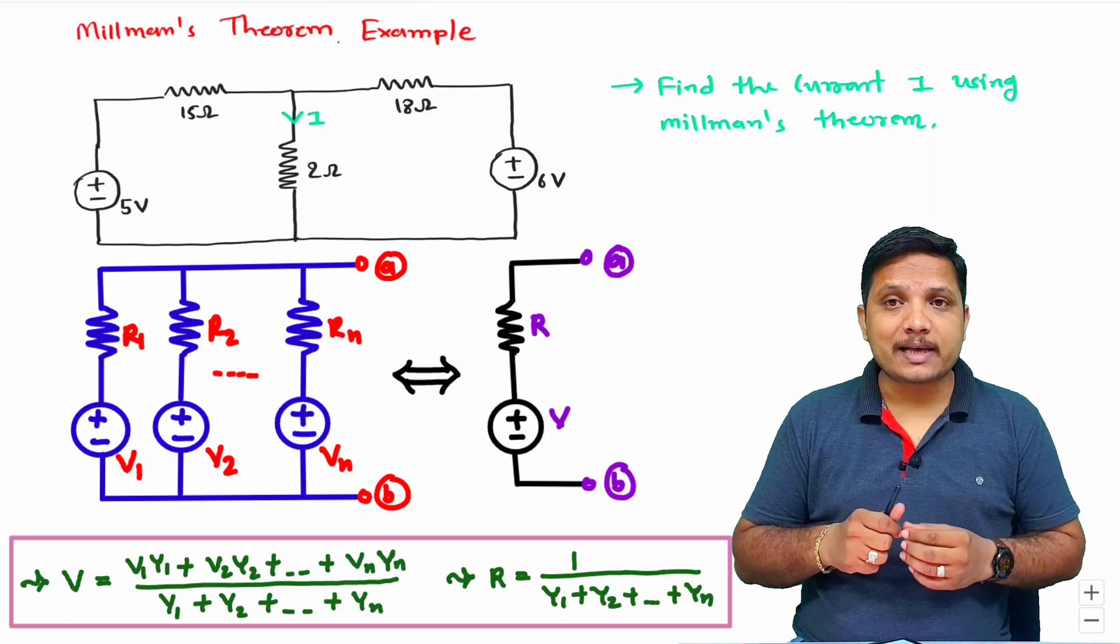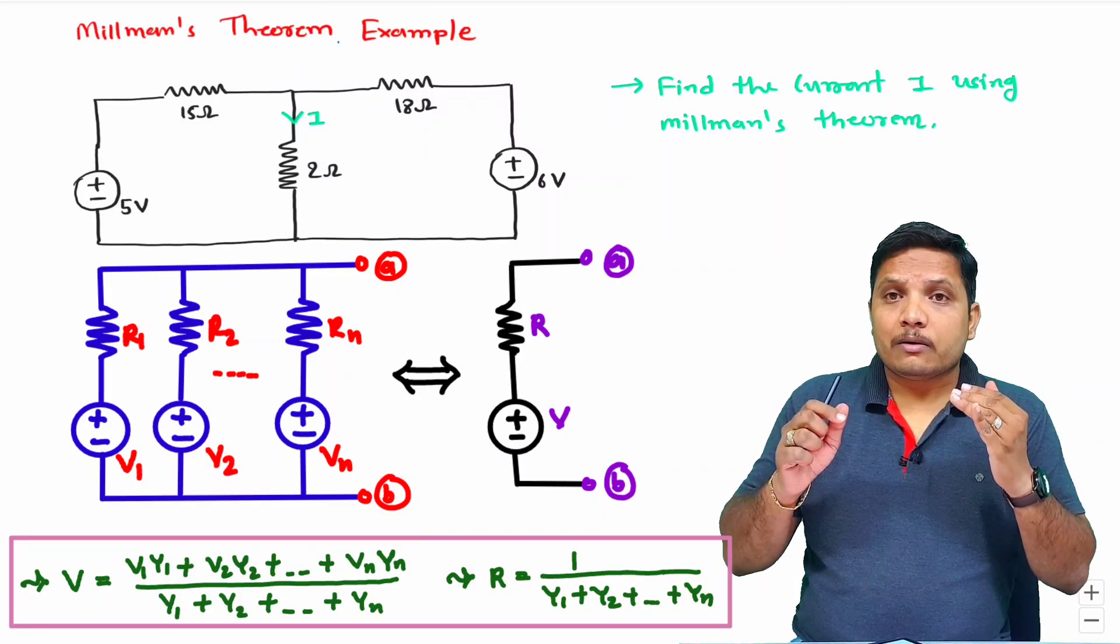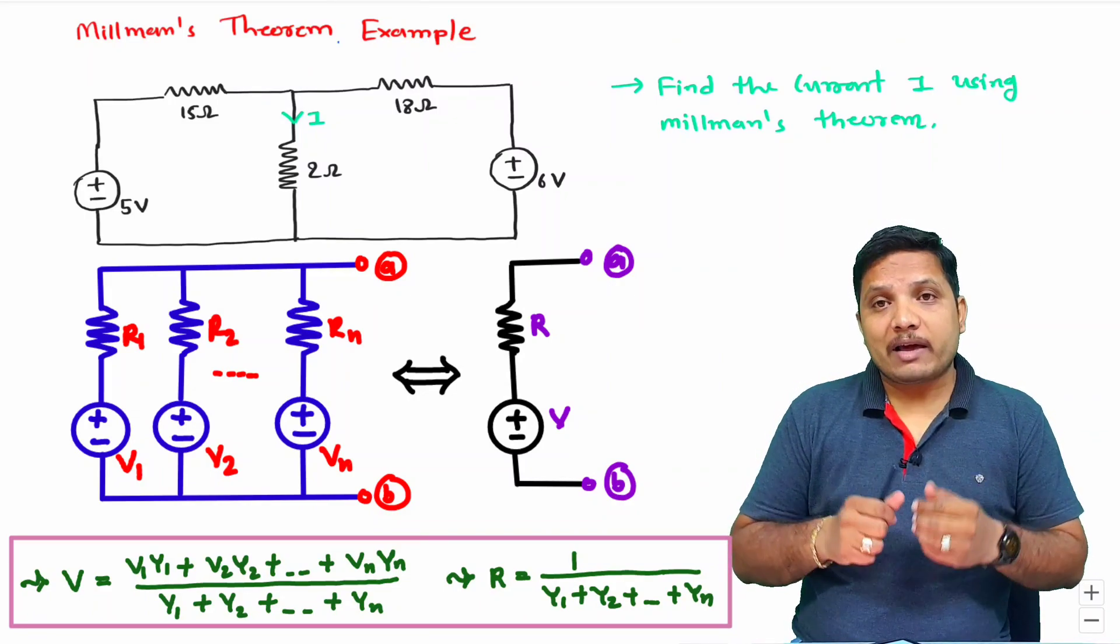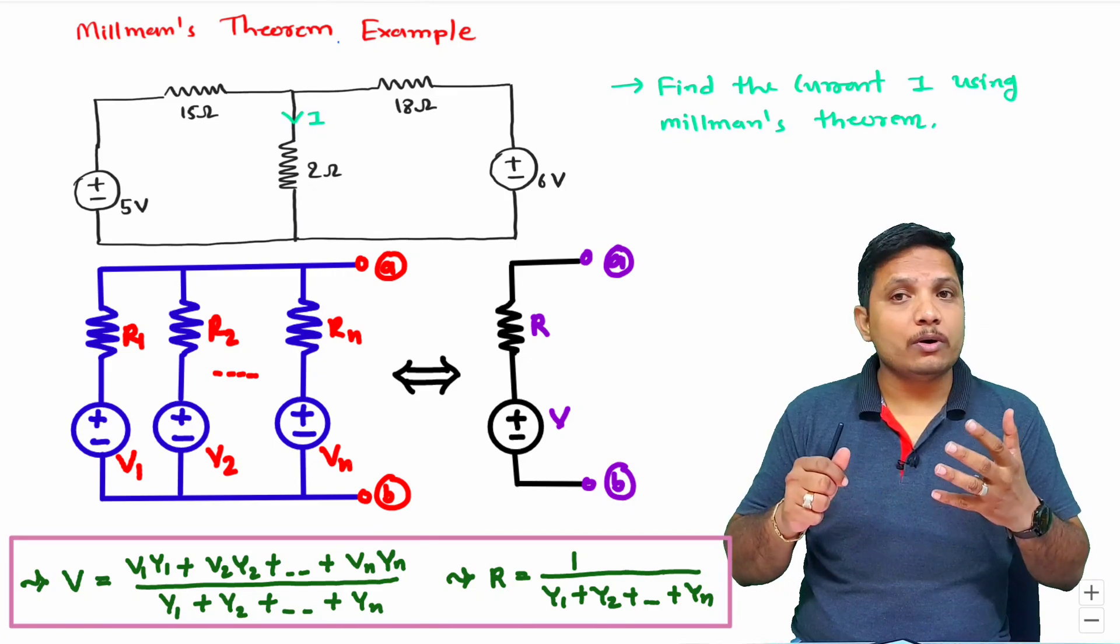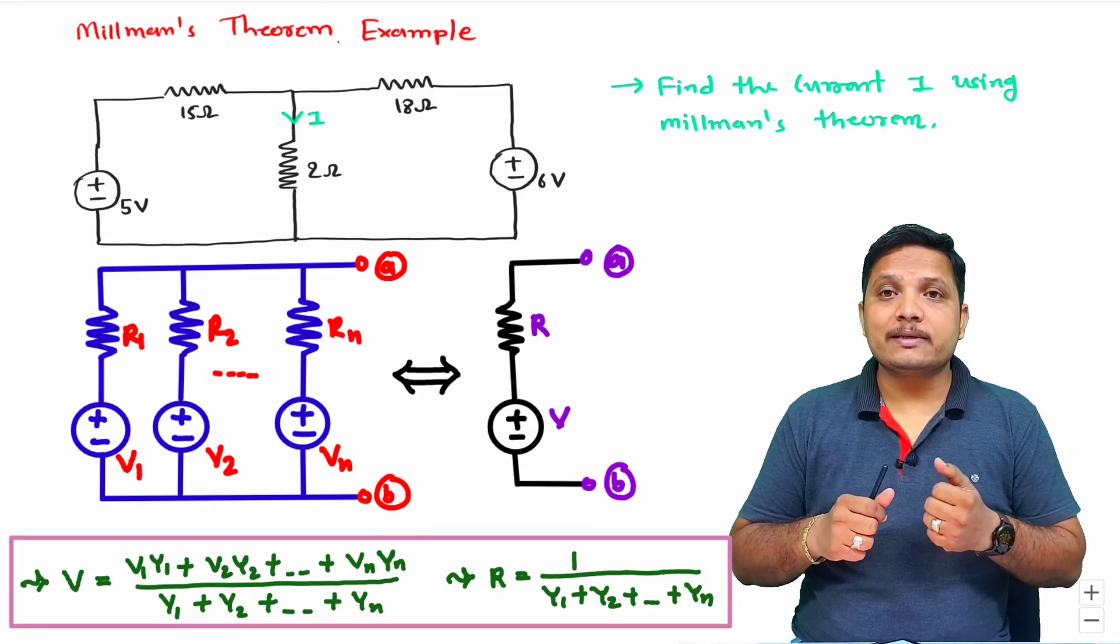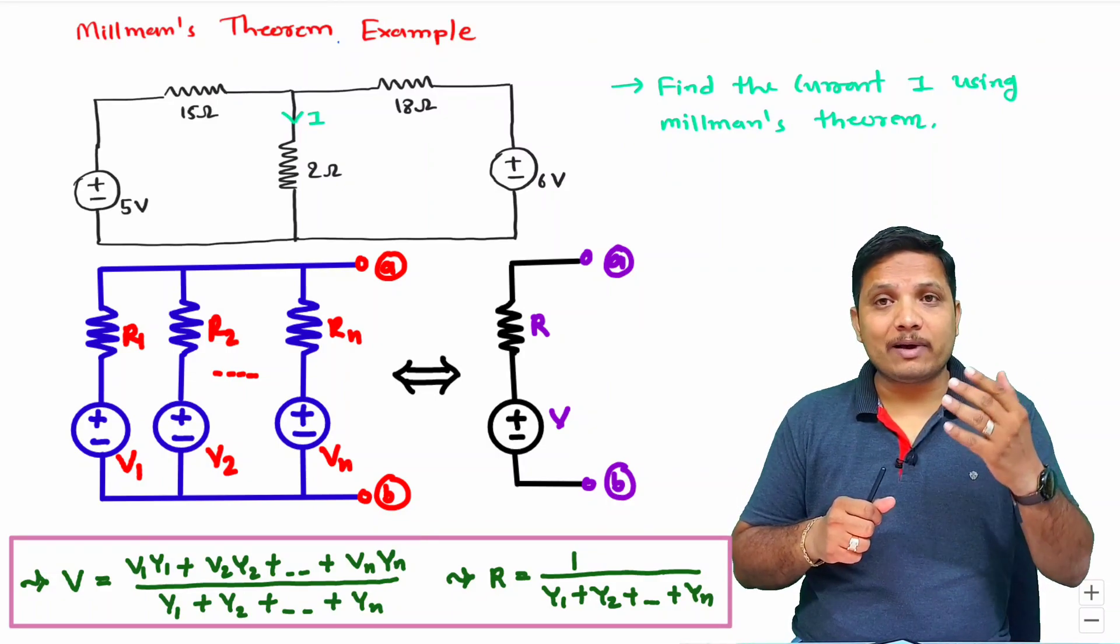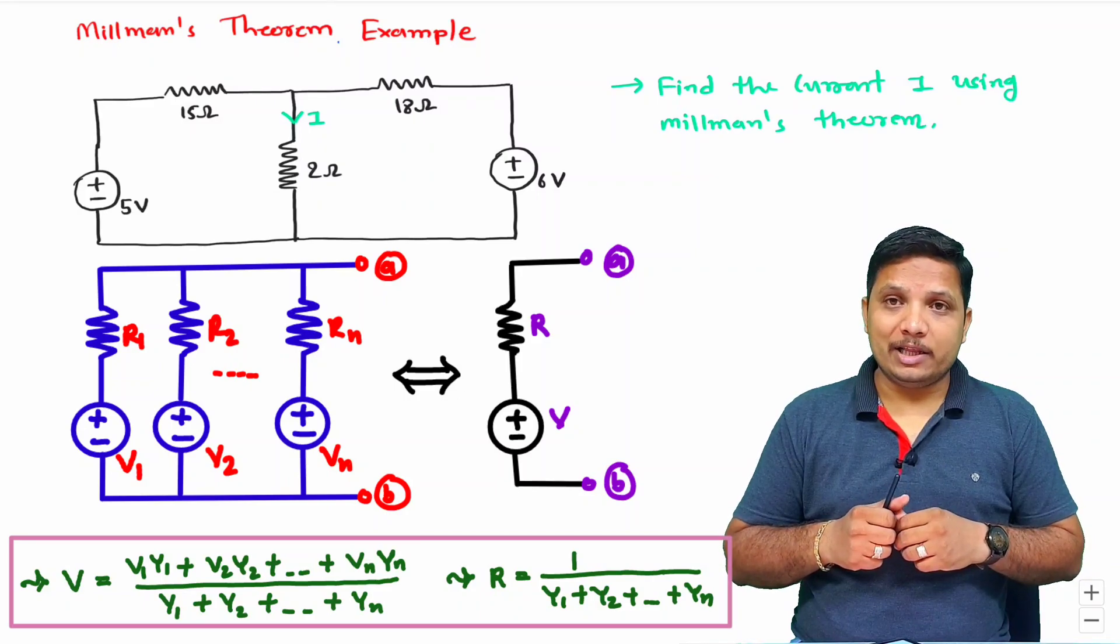And equivalent resistance R is 1 divided by Y1 plus Y2 up to Yn, where Y1, Y2 are admittances. Y1 is 1 by R1, Y2 is 1 by R2. Likewise, we need to apply the values.